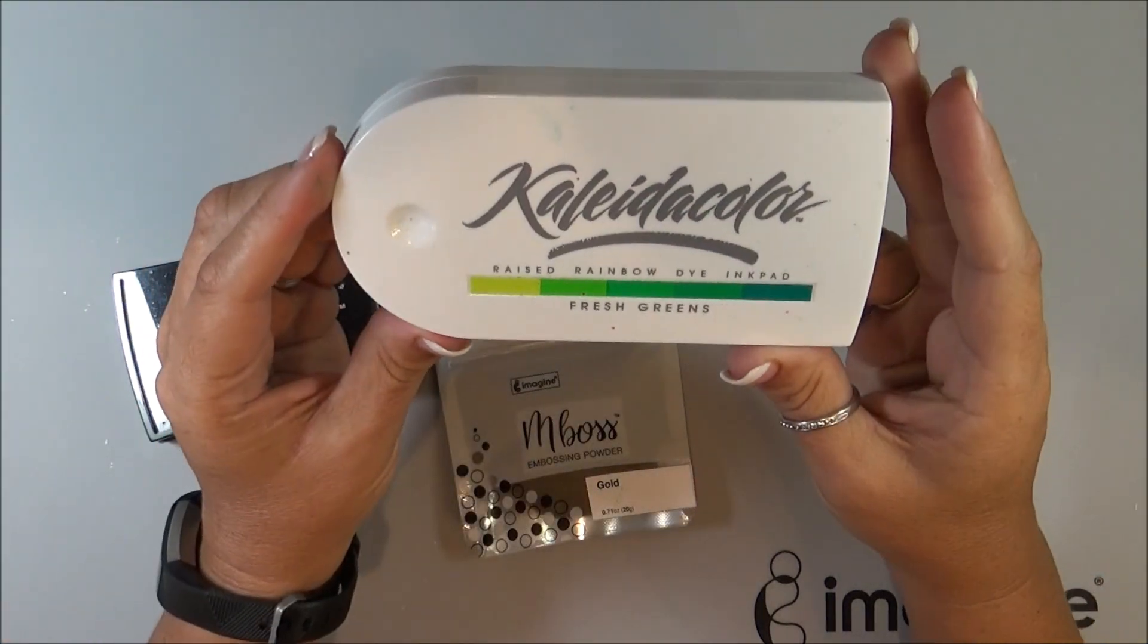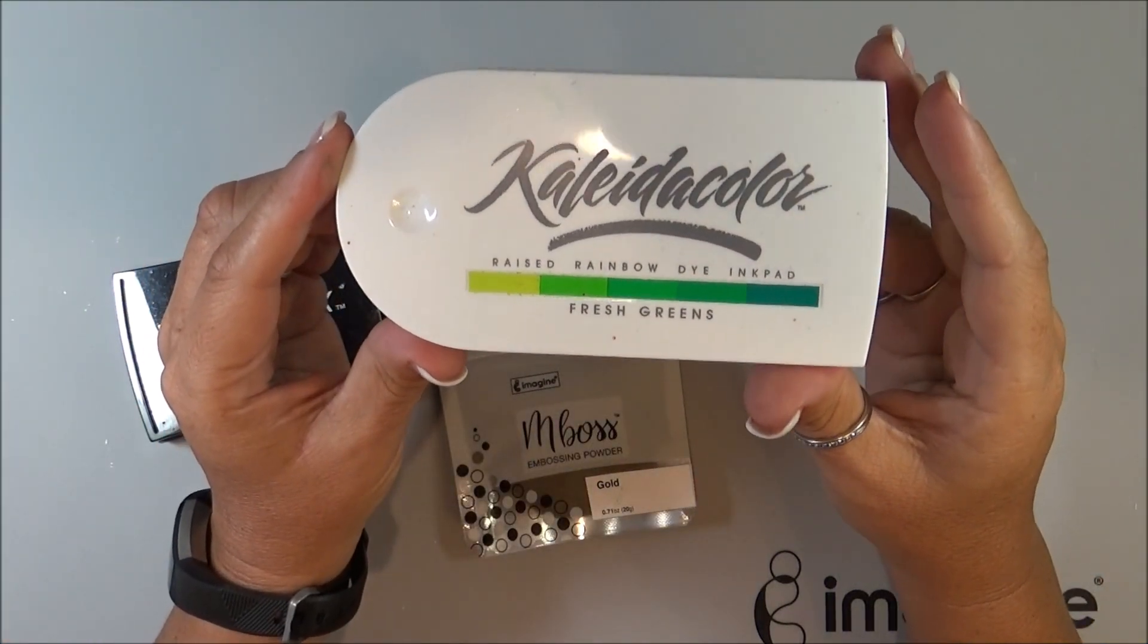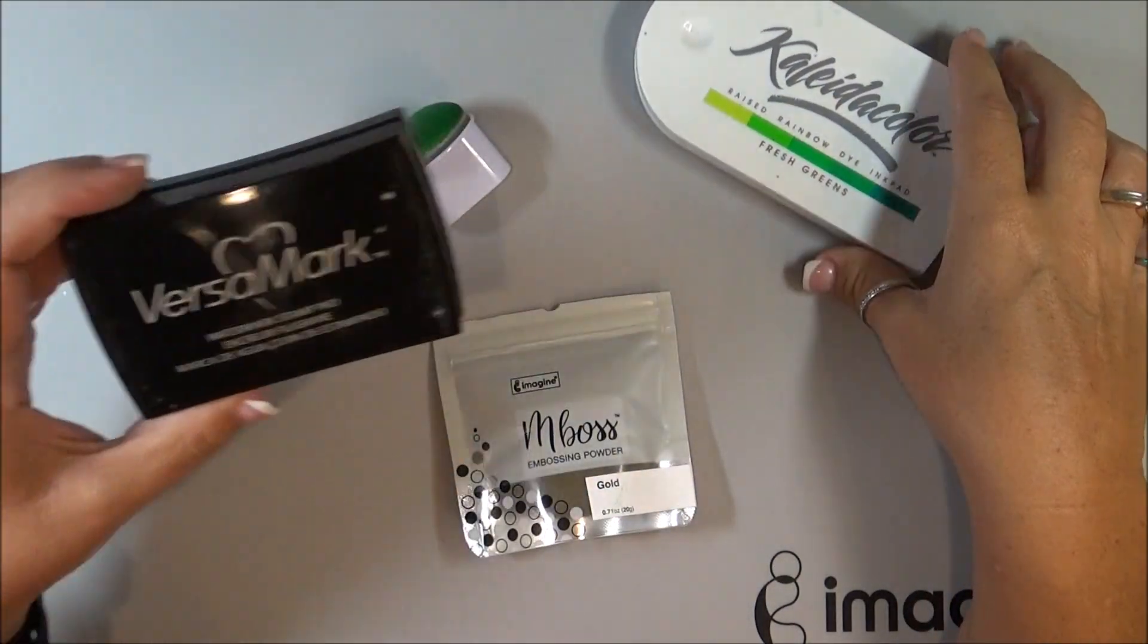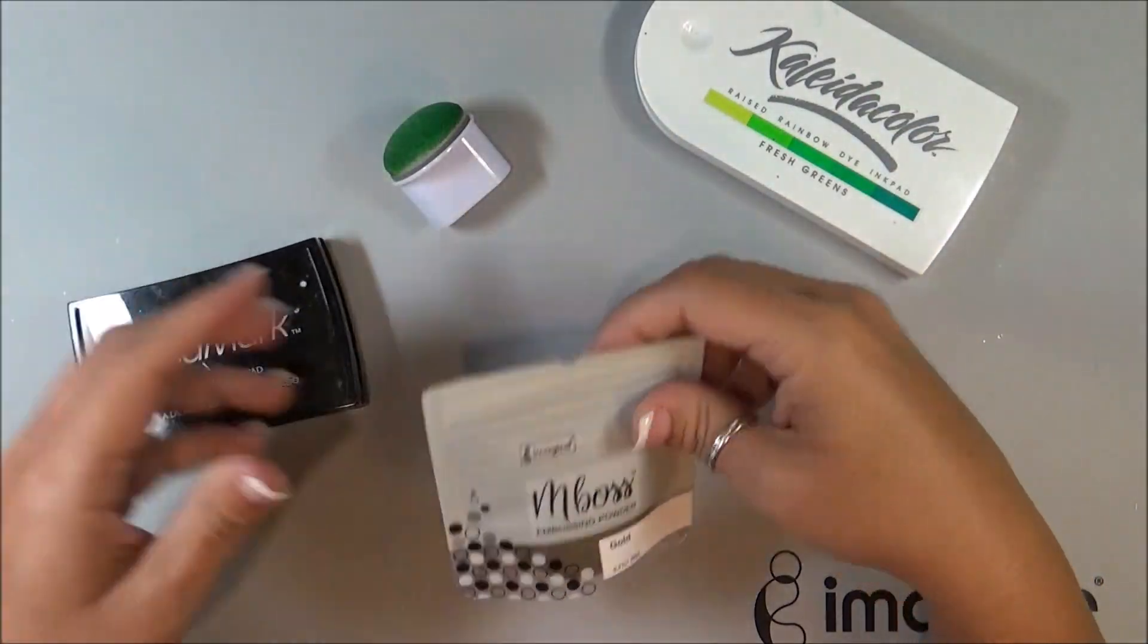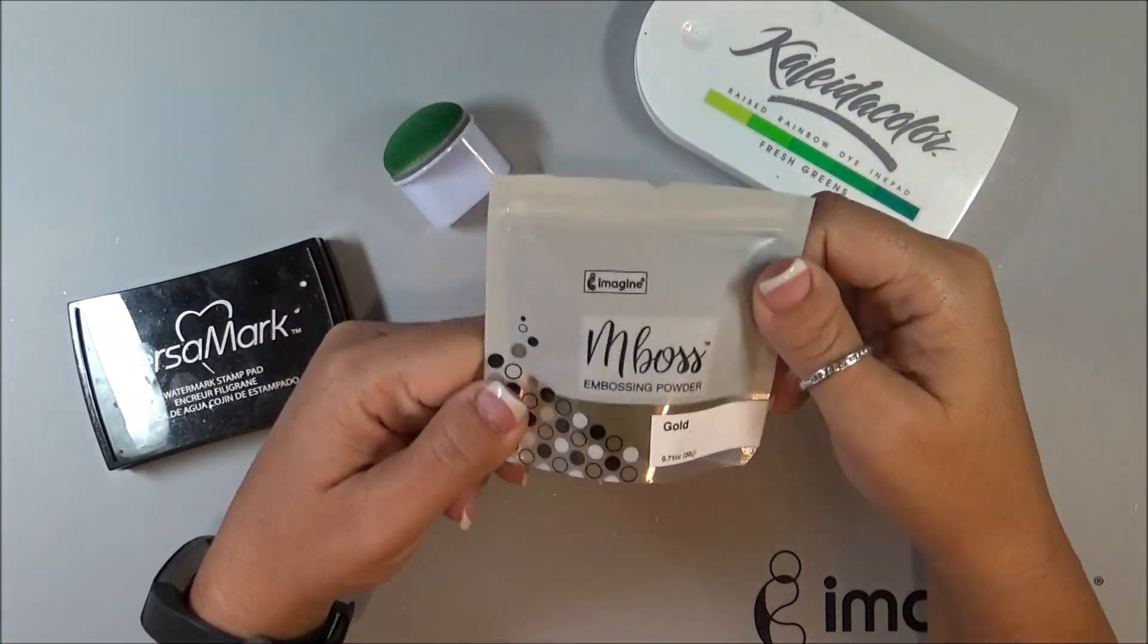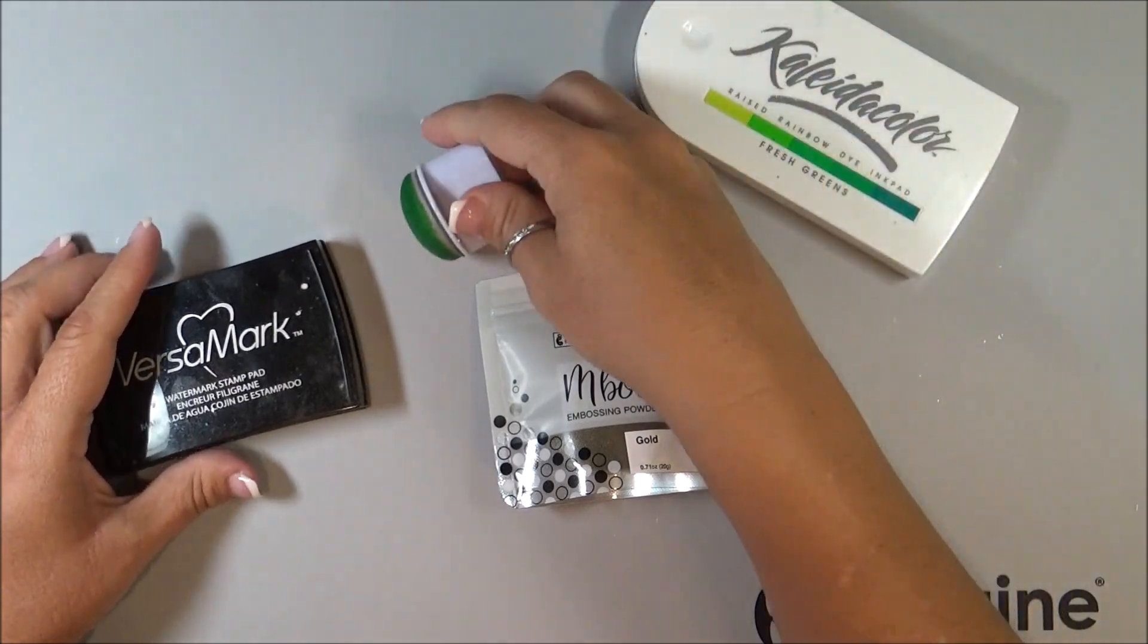I'm going to be using the Kaleidacolor in Fresh Greens from Imagine, the Versamark, and some gold emboss powder, and then also a big jumbo dauber.